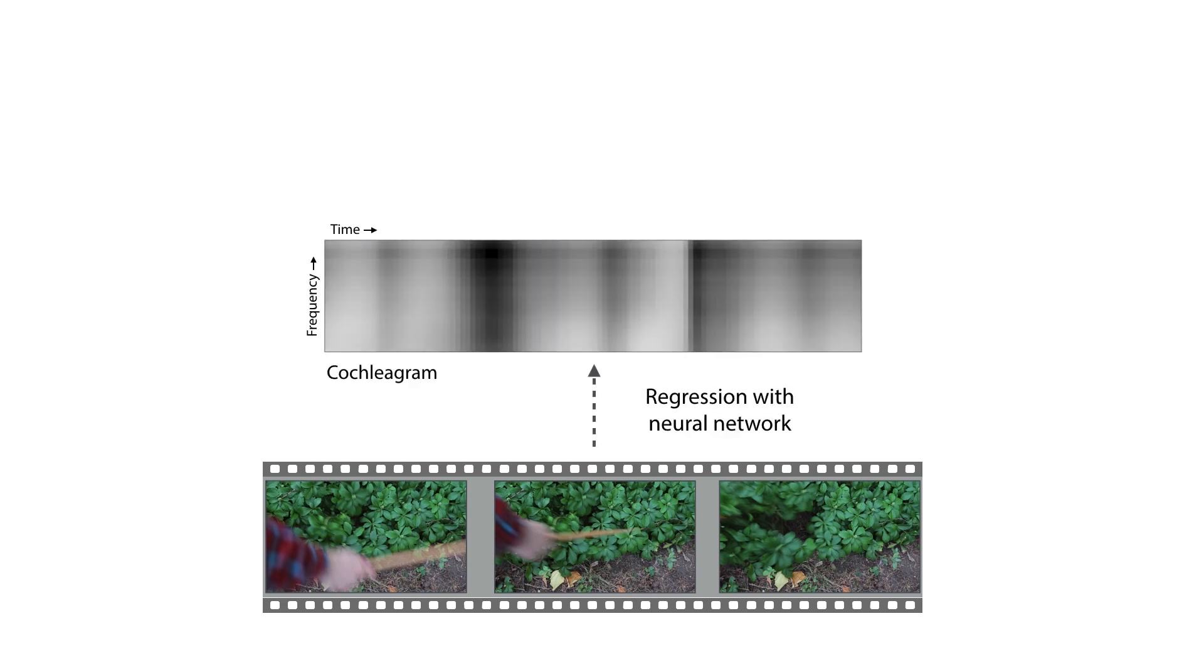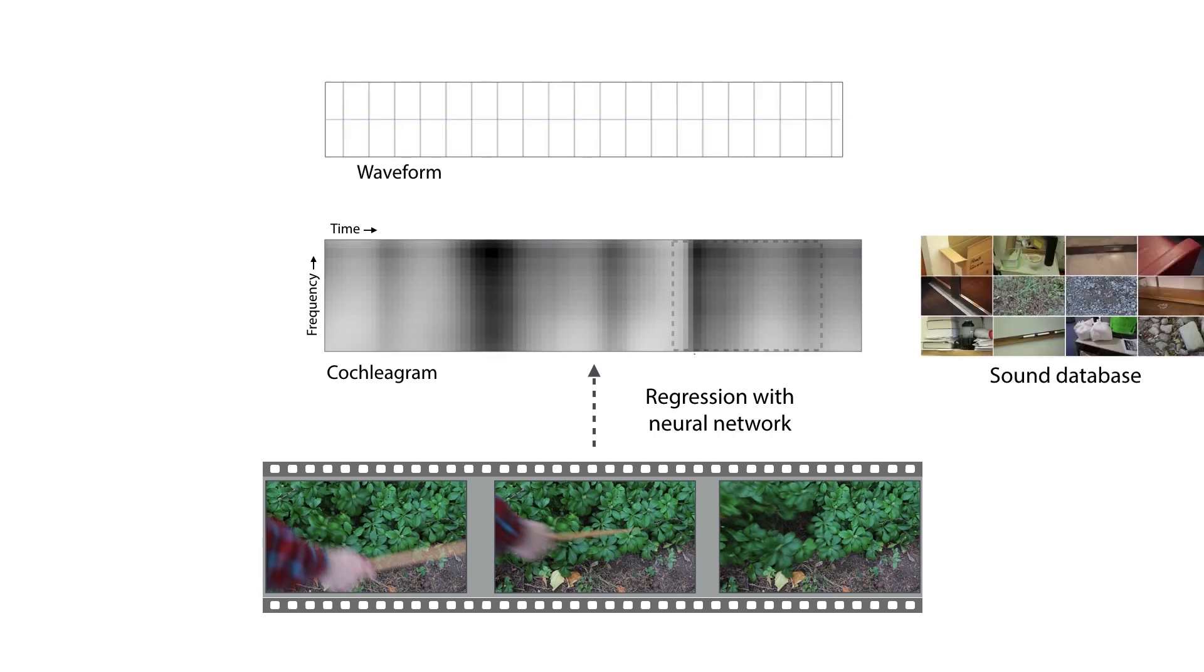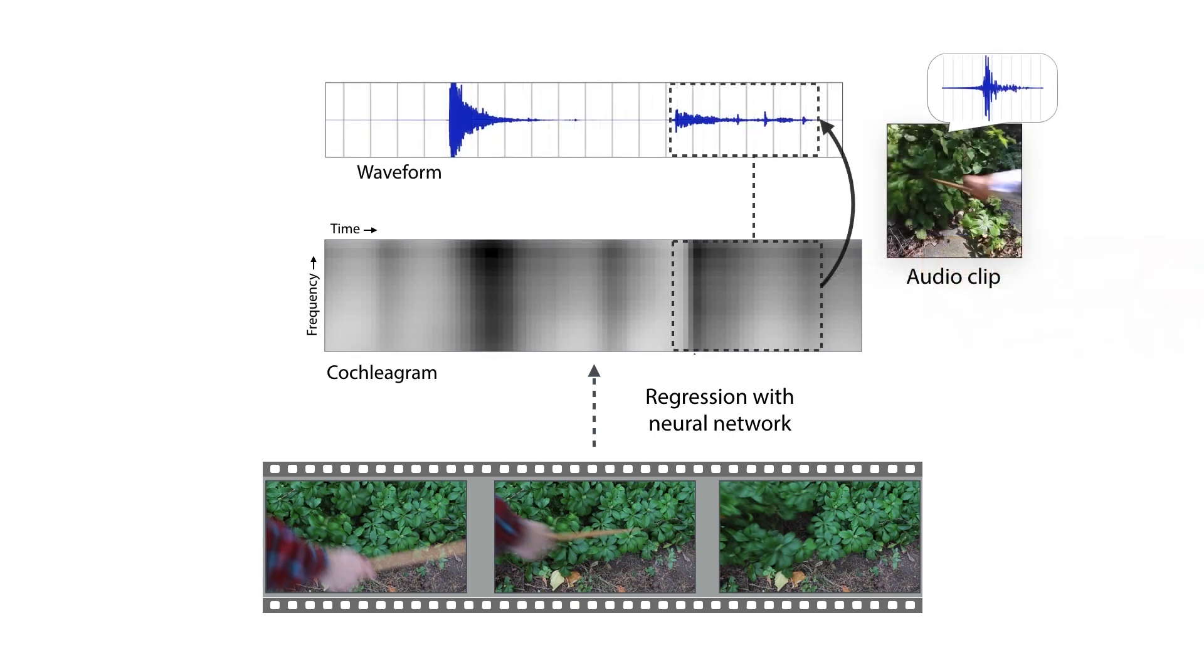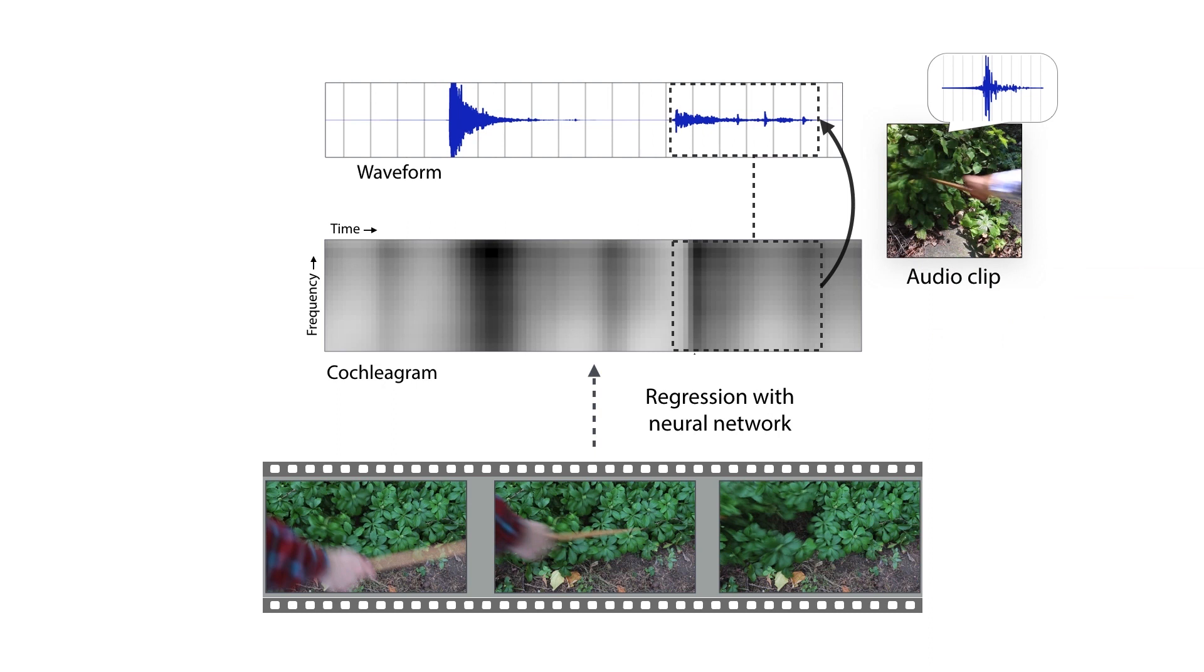Our algorithm takes a video sequence as input, and it predicts a corresponding sequence of sound features. After our network predicts sound features, we synthesize a waveform by matching these features to a database of impact sounds, and transferring the best matches.